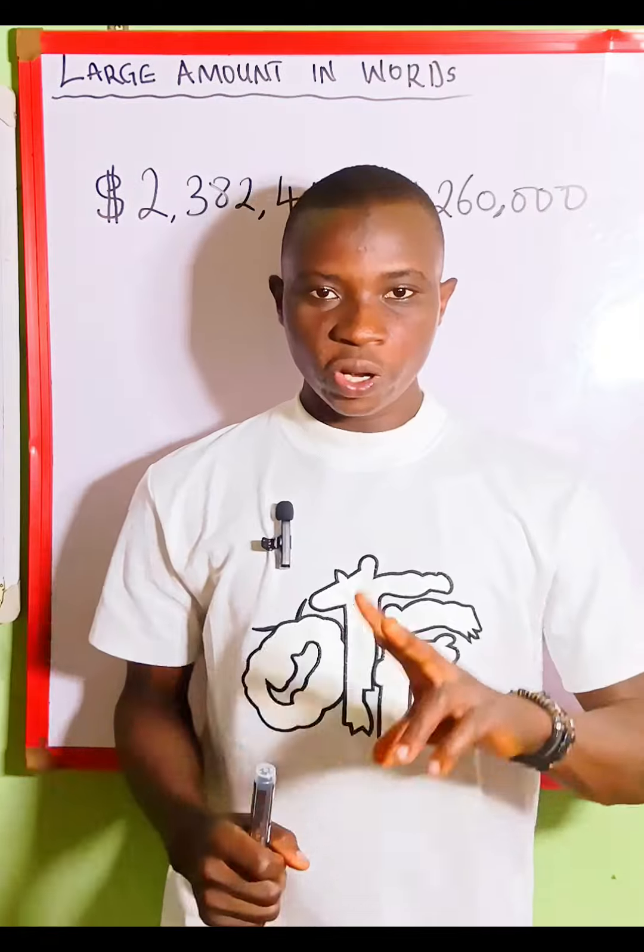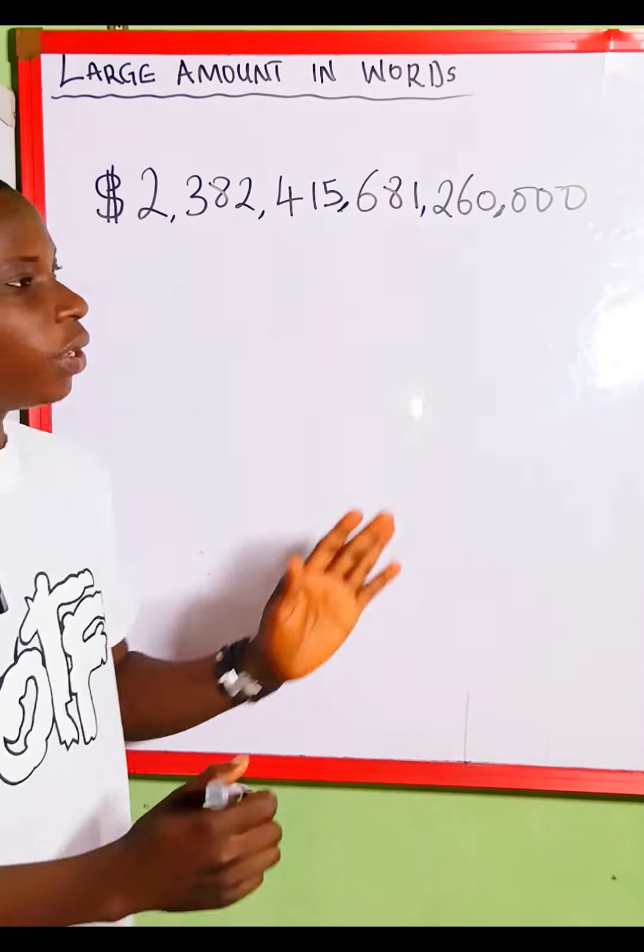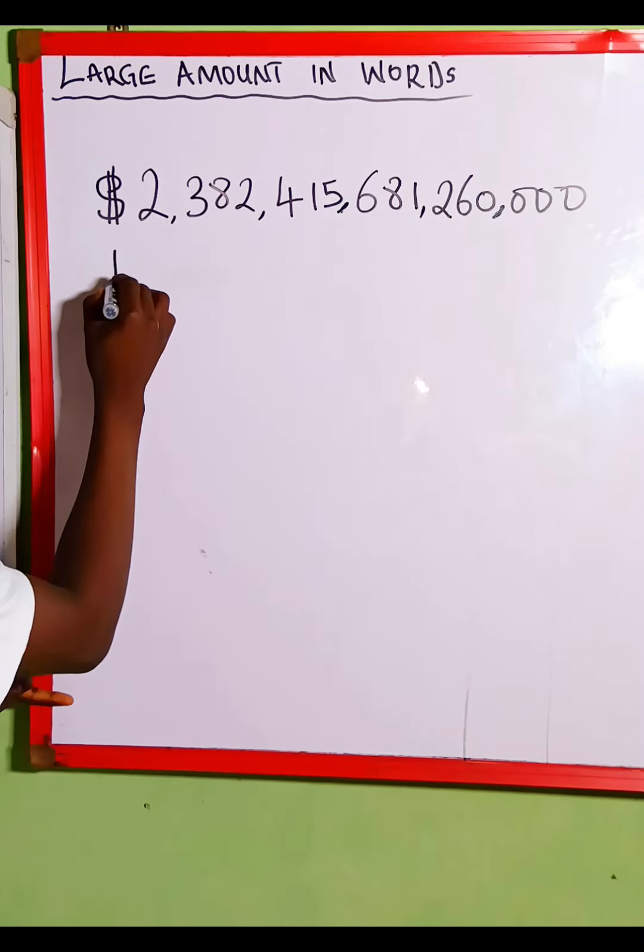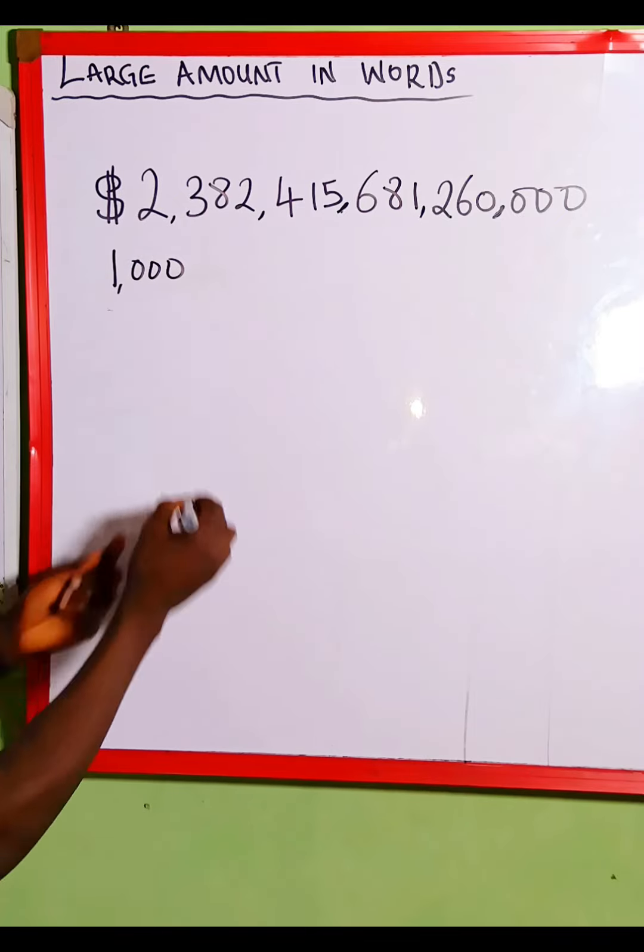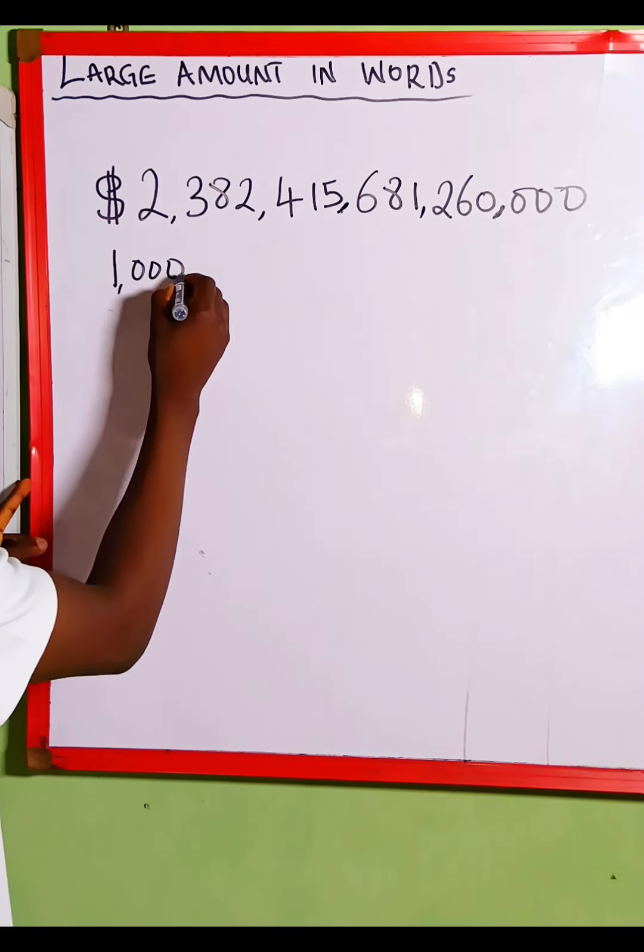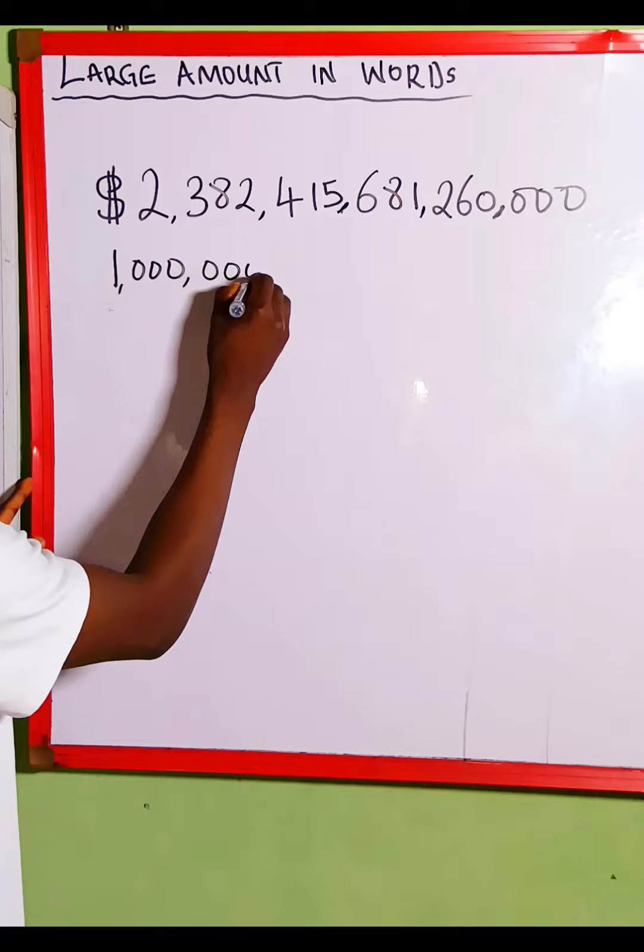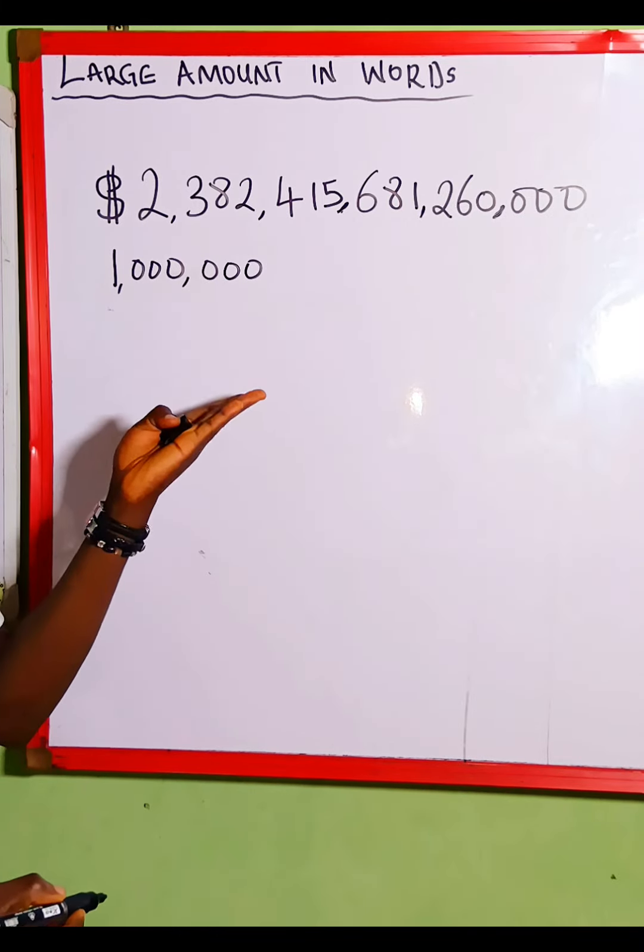Now let's read it together. To read this amount properly in words, we need to start from the basics. 1,000, this is pronounced as one thousand. When I put a comma, then I add another three zeros, this becomes 1 million.